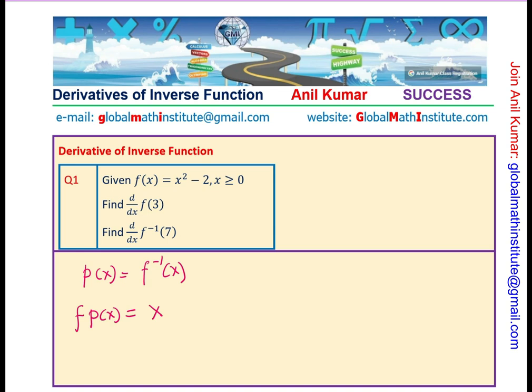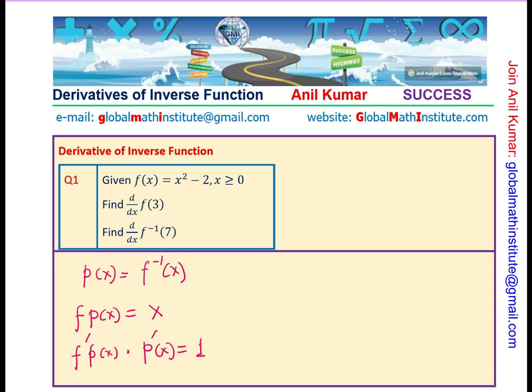Now, derivative of this function, if I take differentiate both sides, we get f prime of p of x times derivative of p of x equals to 1, taking derivative on both sides.